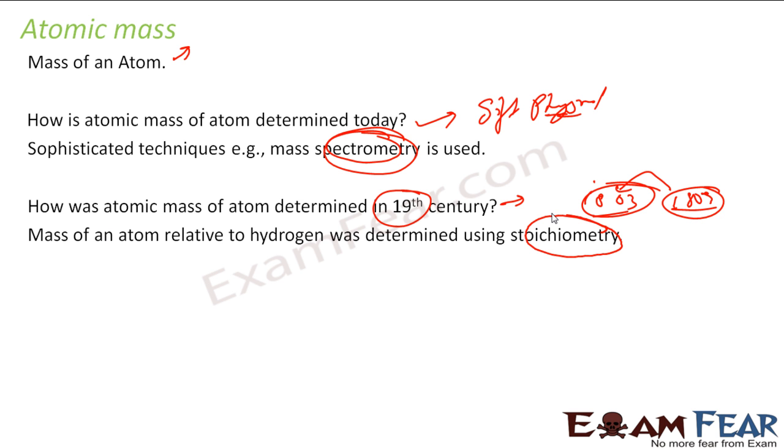They used to find using stoichiometry. Stoichiometry is nothing but you do a lot of chemical reactions and then you find the atomic mass. They used to find the atomic mass relative to hydrogen and they considered hydrogen as atomic mass 1. And then they used to find the atomic mass of any other element related to hydrogen using stoichiometry.